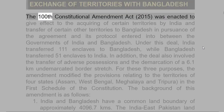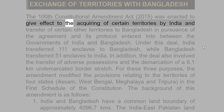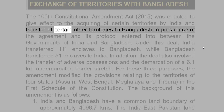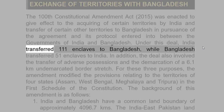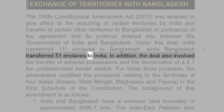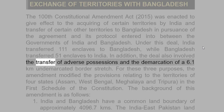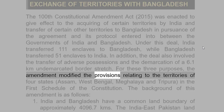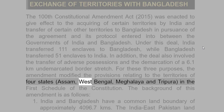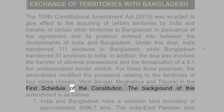The 100th Constitutional Amendment Act, 2015, was enacted to give effect to the acquiring of certain territories by India and transfer of certain other territories to Bangladesh in pursuance of the agreement and its protocol entered into between the governments of India and Bangladesh. Under this deal, India transferred 111 enclaves to Bangladesh, while Bangladesh transferred 51 enclaves to India. In addition, the deal also involved the transfer of adverse possessions and the demarcation of a 6.1 km undemarcated border stretch. For these three purposes, the amendment modified the provisions relating to the territories of four states — Assam, West Bengal, Meghalaya and Tripura — in the First Schedule of the Constitution.